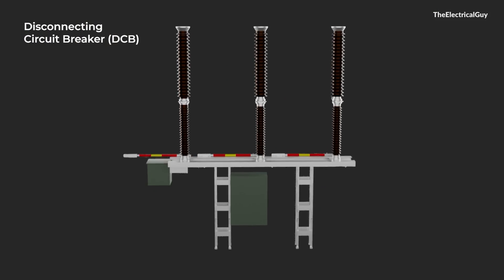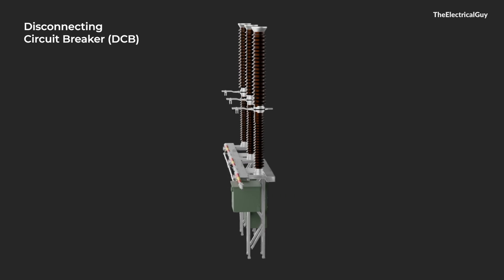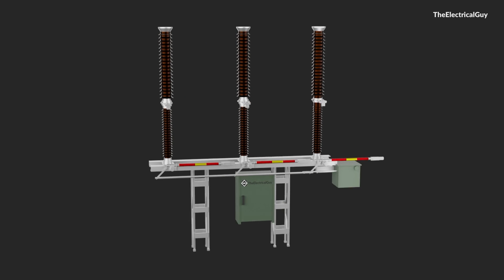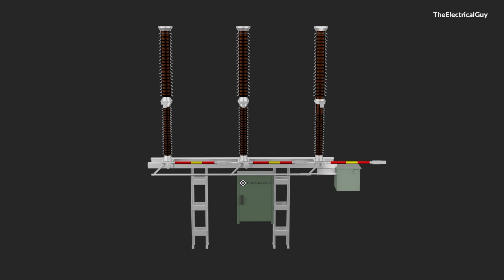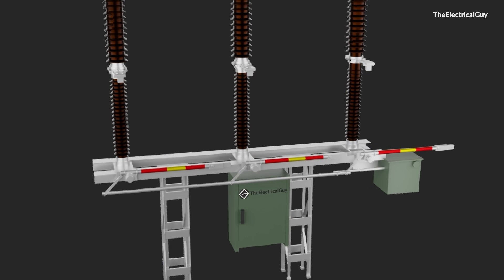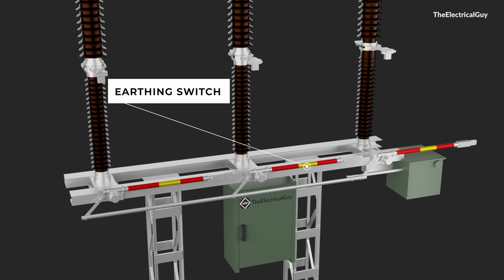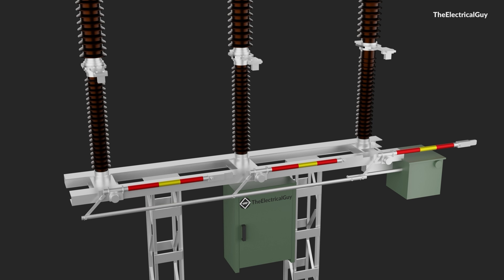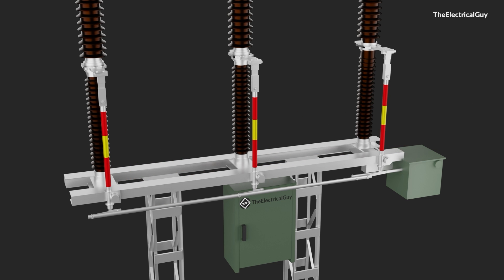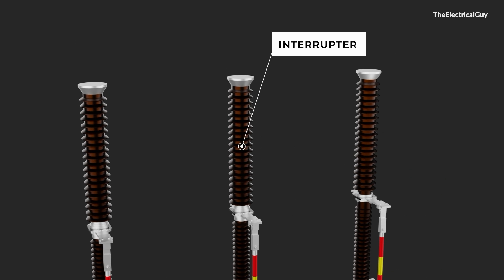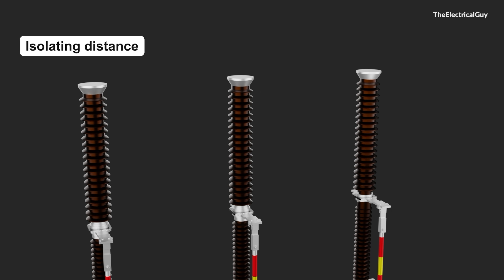Since the disconnecting circuit breaker is a combination of a disconnector and a circuit breaker, it will have all the components of both devices. It looks similar to a regular SF6 circuit breaker, but one notable change is the integrated earthing switch provided with the circuit breaker — needed to earth the trapped charges, a function required by the disconnector. Dedicated earthing switches are provided for each phase. The top part of the breaker consists of the interrupter, just like a regular one, but this interrupter also satisfies the requirement of an isolating distance when in open condition — basically the disconnector function.